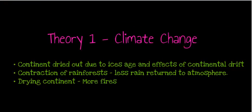What led to the change in Australian species from rainforest to dry sclerophyll and grasslands? Theory one is climate change. This suggests that as the continent dried, ice ages occurred and continental drift moved Australia north, changing the environment. This would also cause a contraction in rainforests, reducing transpiration and therefore rainfall. A drying continent would have caused more fires from lightning strikes, and fire and drought caused changes in species.